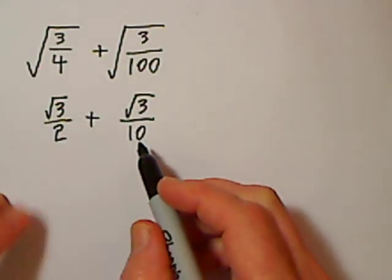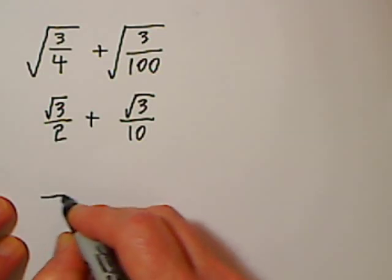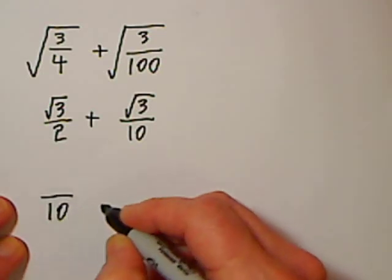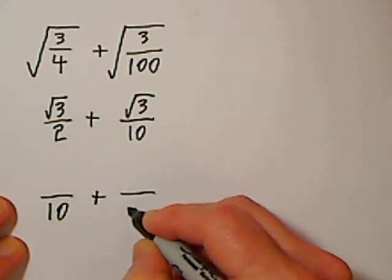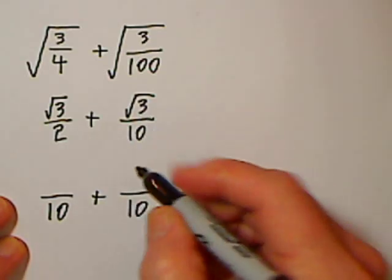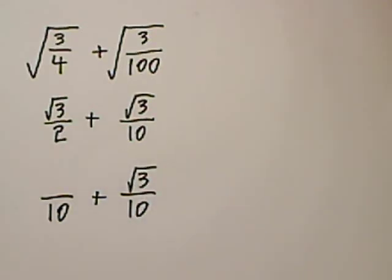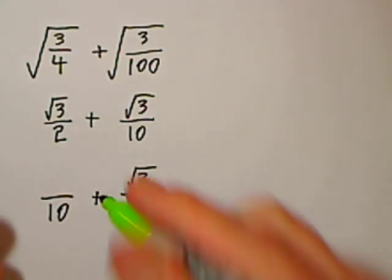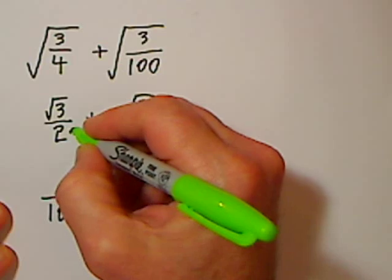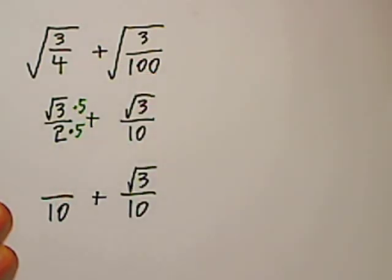At this point you need common denominators in order to add or subtract, so our common denominator is 10. This denominator is already 10, so nothing will change with the numerator, but the other one, to get from 2 to 10, we will multiply by 5, so we have to do the same thing to the numerator.